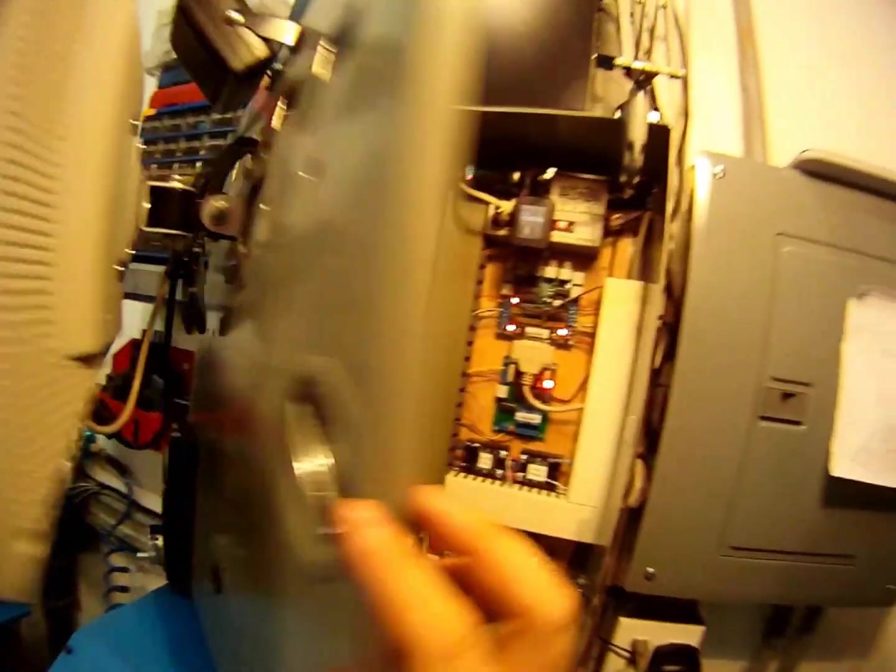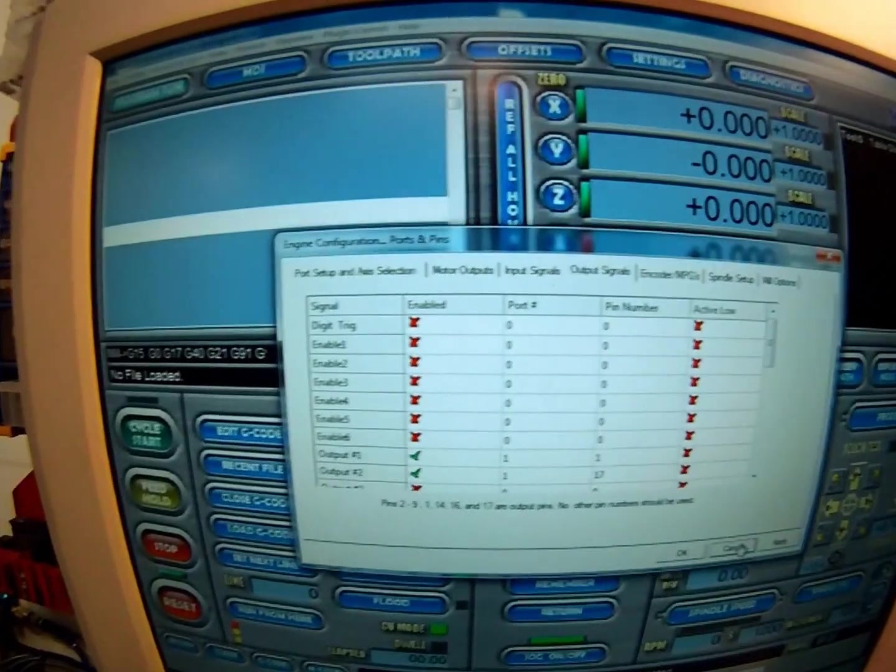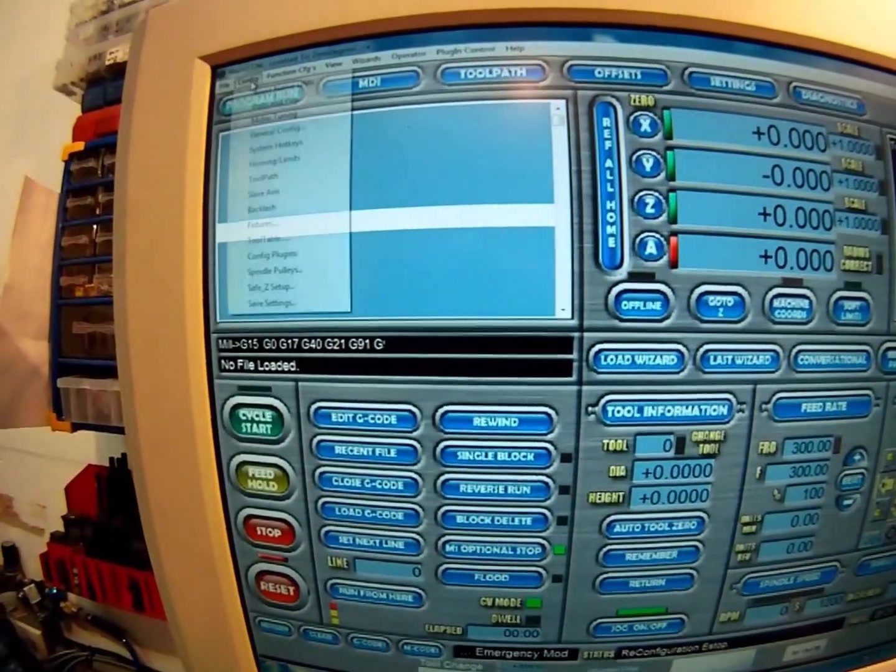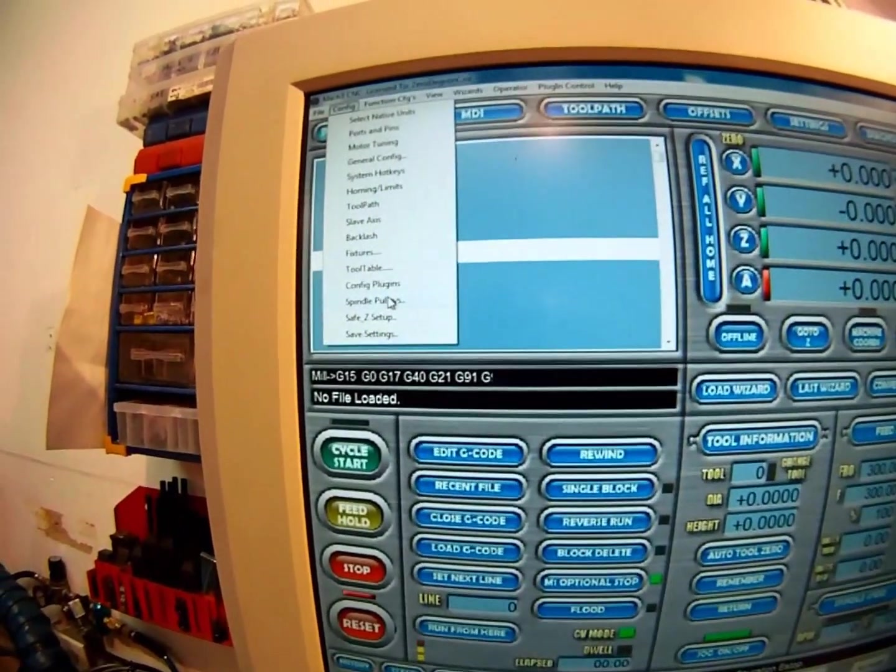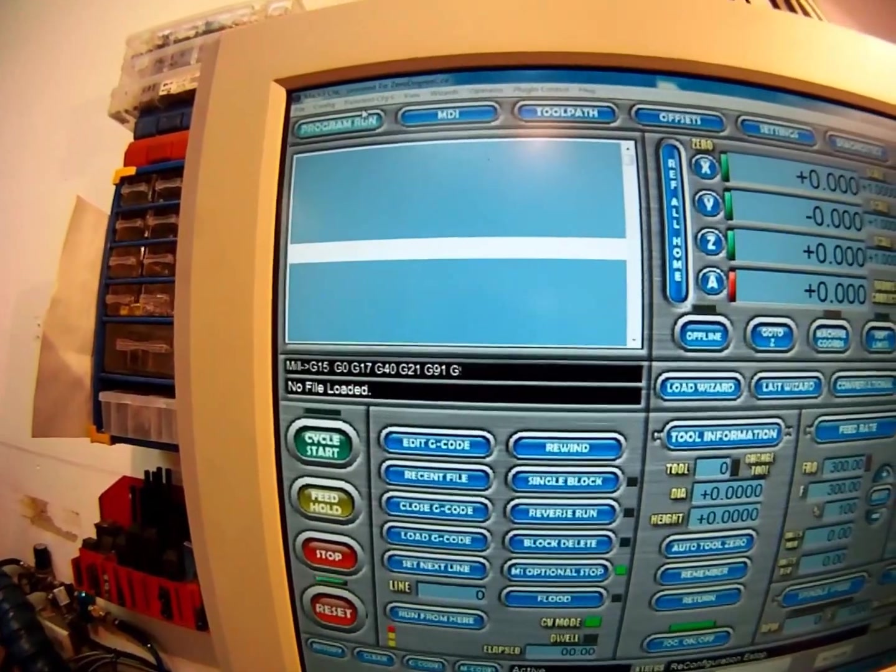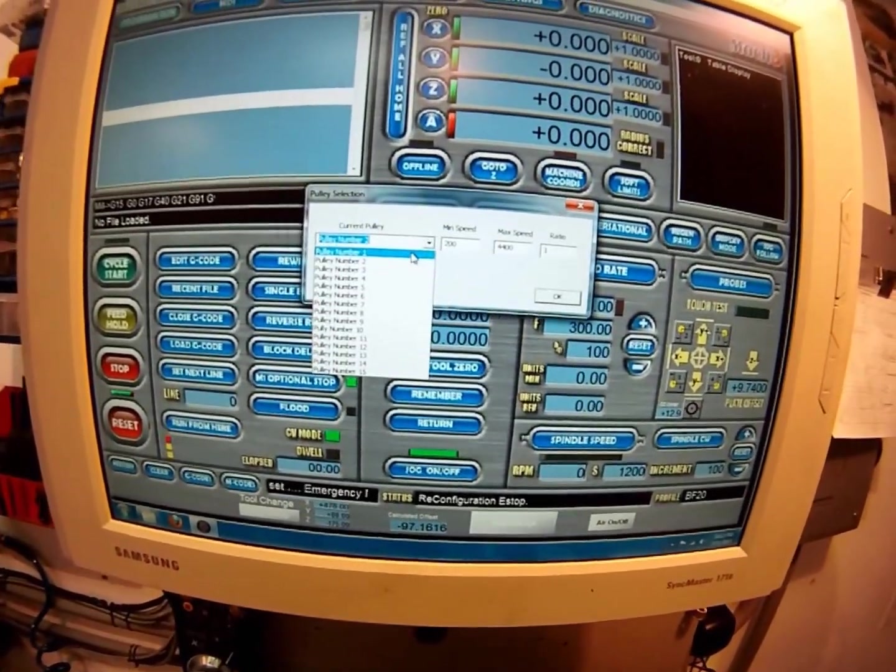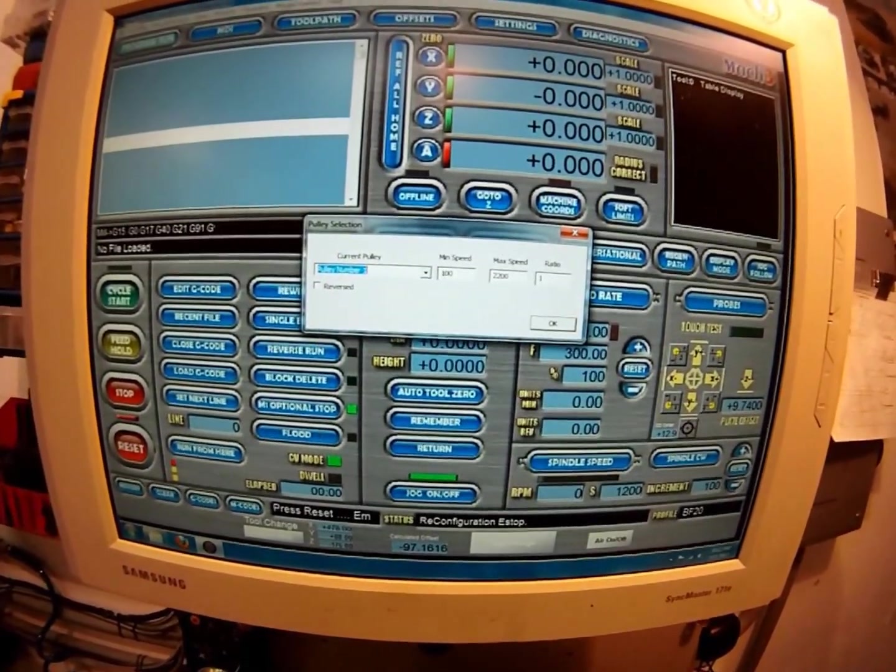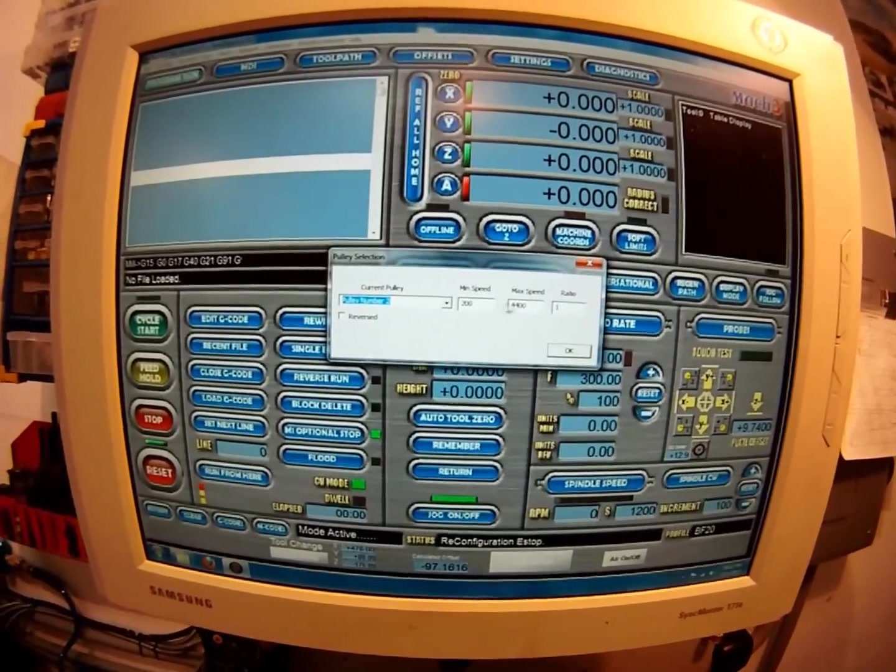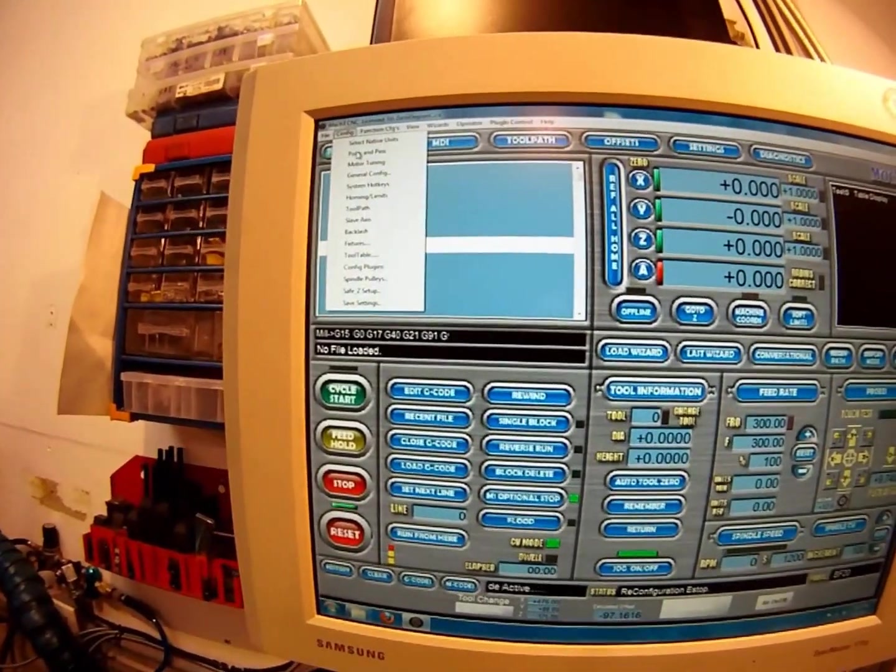Now the other thing you have to set up is you will have to set up your spindle pulleys. Here are my spindle pulleys. I found that I only have two, high and low speed. Pulley one, 100 to 2200, and number two I'm getting 200 to 4400.